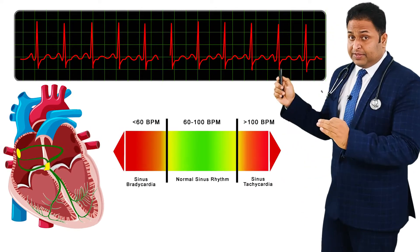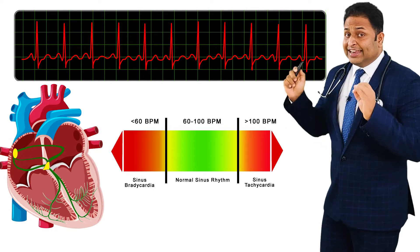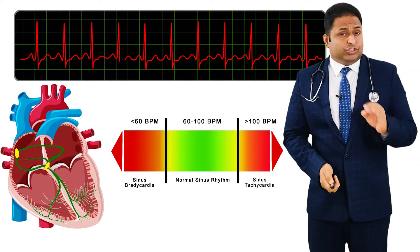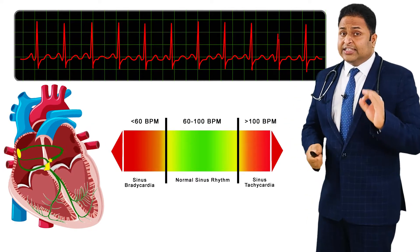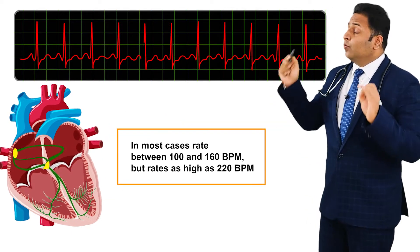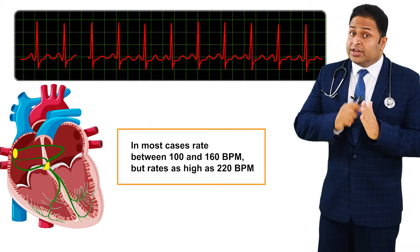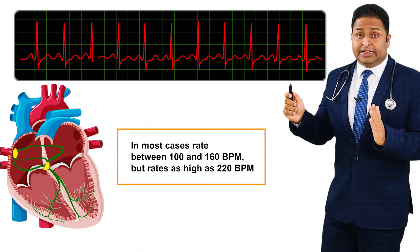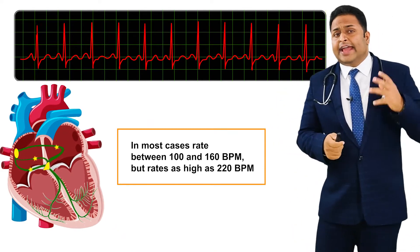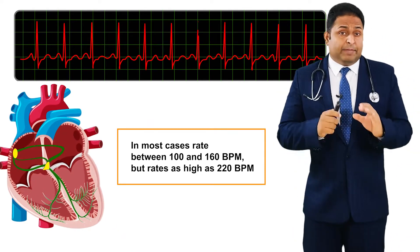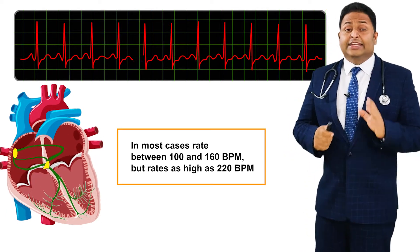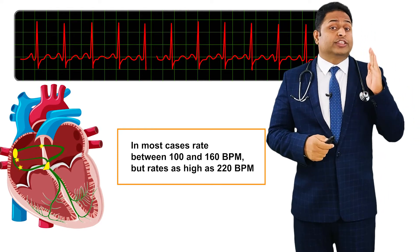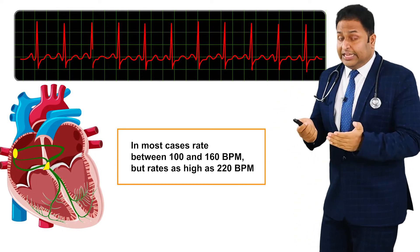If you look at the spectrum, sinus tachycardia lies on the faster end. In most cases sinus tachycardia has a rate between 100 and 160 beats per minute, but the range can go up to 220 beats per minute. At the higher rate, the diagnosis of sinus tachycardia becomes increasingly difficult and can sometimes be confused with some of the other supraventricular tachycardias, which we will discuss in further lessons.